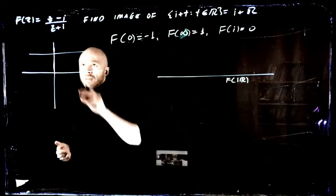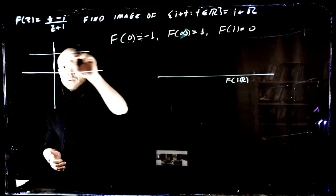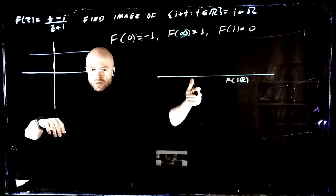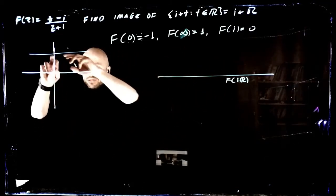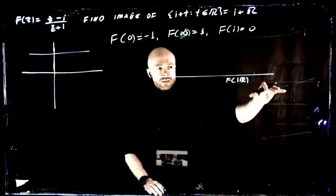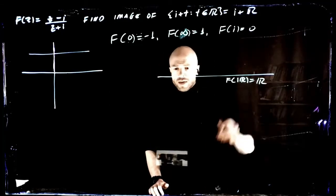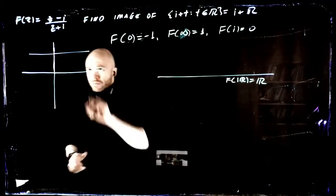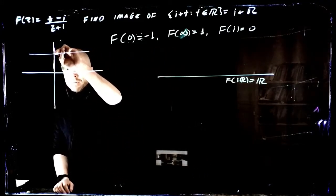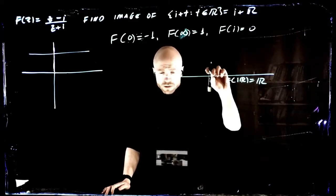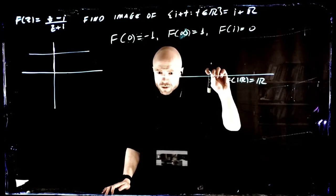So f of the imaginary line is the real line. What else do we know? We see that our horizontal line is cutting perpendicularly through the imaginary line. So in the image, it's a circle that has to do the same thing. This thing has to cut through perpendicularly to this line here.